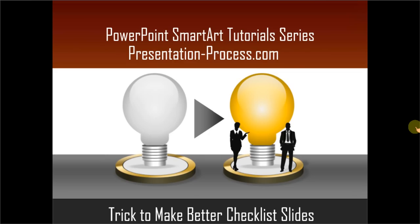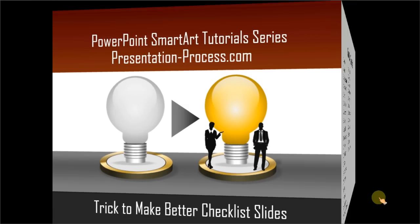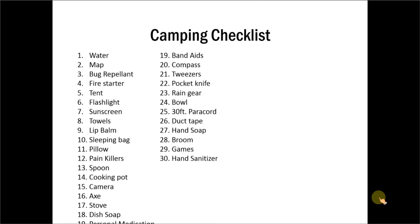Lists and checklists are a common part of many business presentations. But unfortunately, most checklist slides are boring and exhausting. Here is an example checklist slide — a camping checklist. What is the first reaction you get when you see this 30-point list? The information is overwhelming, isn't it? Whenever in a business presentation your slides are overwhelming, chances are that you will lose your audience. It is difficult to get their attention back for the rest of the presentation.